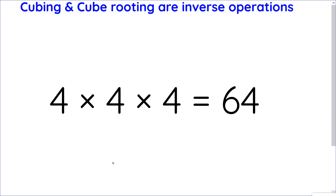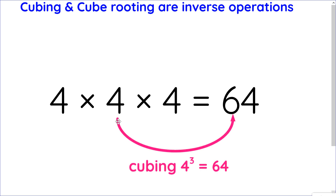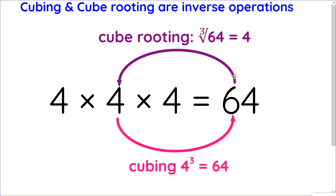Similar to squaring, cubing and cube rooting are inverse operations — they undo each other. Starting with 4 times 4 times 4 equals 64, I can say 4 cubed is 64. And then I can undo that by going backwards: the cube root of 64 is 4.